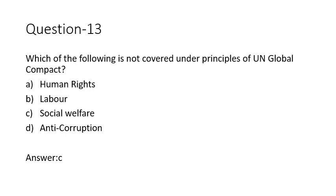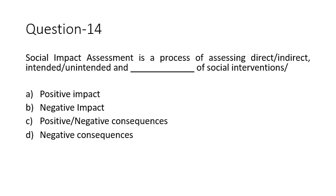Question fourteen: social impact assessment is a process of assessing direct, indirect, intended, unintended, and what kind of consequences? The options include positive and negative consequences only, or negative impact only. The answer is C — positive and negative consequences. Please read the textbook to clearly understand these positive and negative consequences.